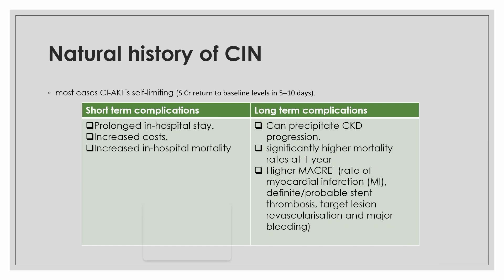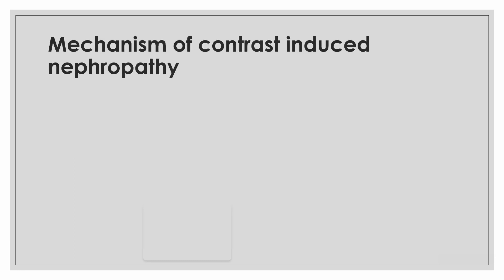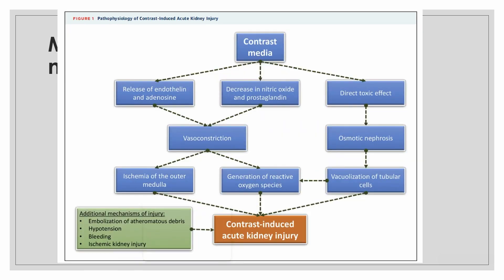Regarding mechanisms of contrast-induced nephropathy, contrast media has direct toxic effects and indirect effects. The direct toxic effect is on tubular cells, while the indirect effect occurs through vasoconstriction, which leads to ischemia of the renal medulla and generation of reactive oxygen species. Additional mechanisms include embolization of atheromatous debris.